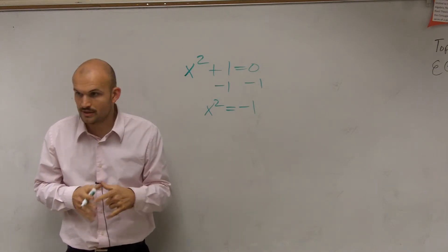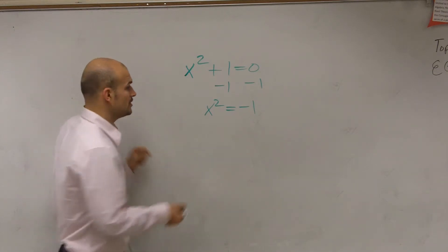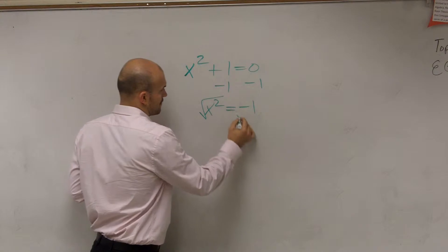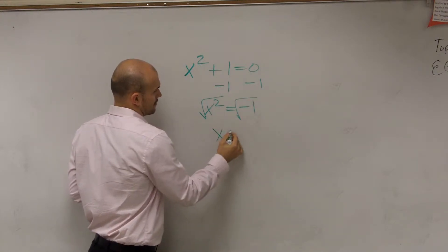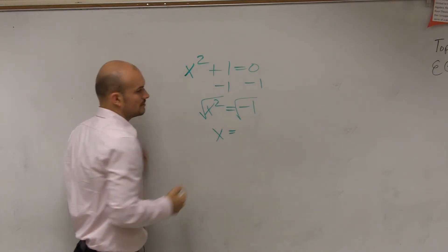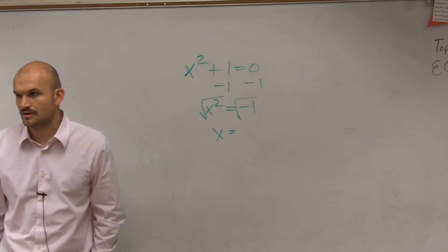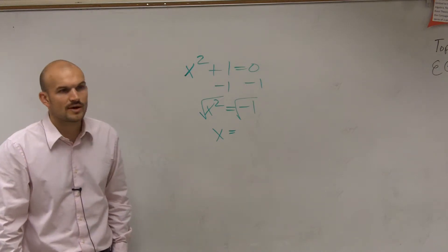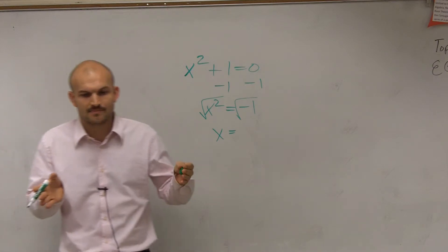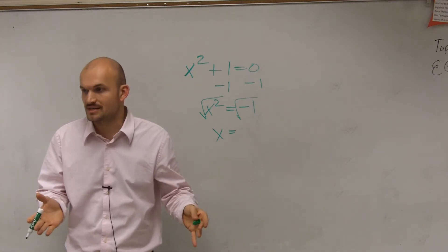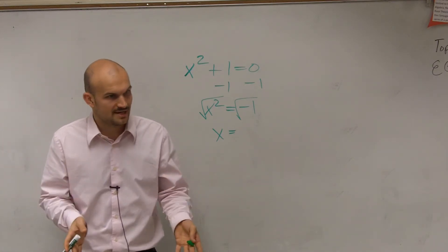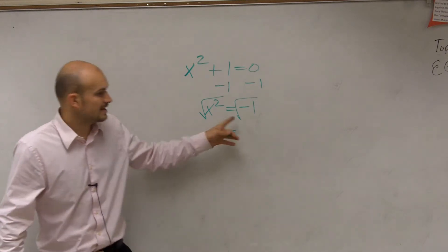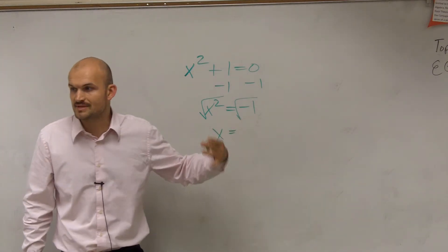So then we have x squared equals negative 1. Now, to take the square root of that, now we come to a little quandary here. How do you take the square root of a negative number? Because we said a positive number times a positive number is positive. A negative number times a negative number is positive. The only way to get a negative number is to multiply a positive times a negative, right?